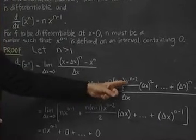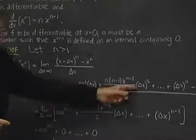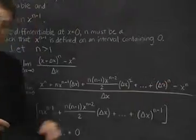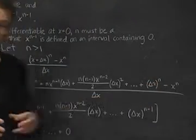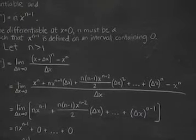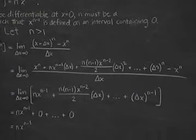n(n-1)/2 times x^(n-2) times delta x squared and so on down to delta x^n, and then minus x^n. And we want that limit as delta x goes to 0. Well, we have some fortunate cancellations.